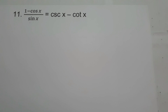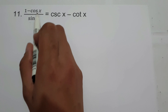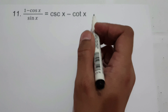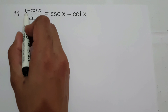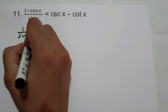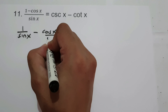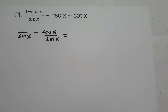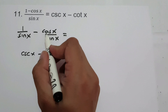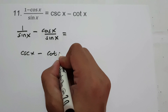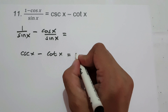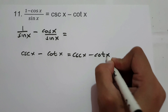On number 11, we have 1 minus cosine x all over sine x equals cosecant x minus cotangent x. To simplify the given identity, let us separate the denominator of 1 and negative cosine x. So let us have 1 over sine x minus cosine x over sine x. We all know that 1 over sine x is cosecant x, minus cosine x over sine x is cotangent x. Therefore, 1 minus cosine x over sine x is equal to cosecant x minus cotangent x.